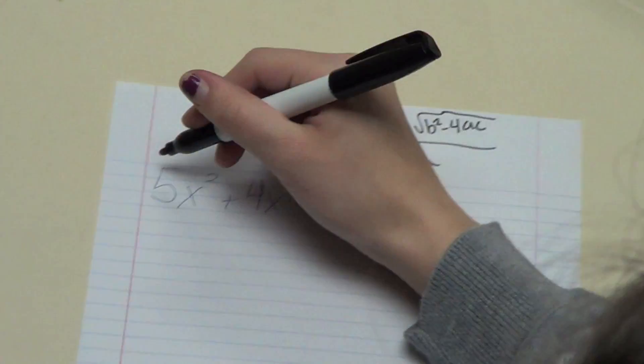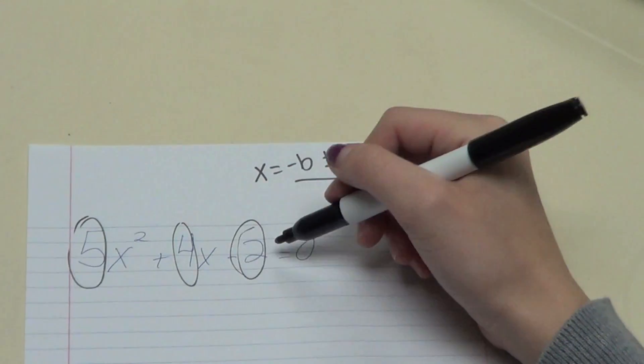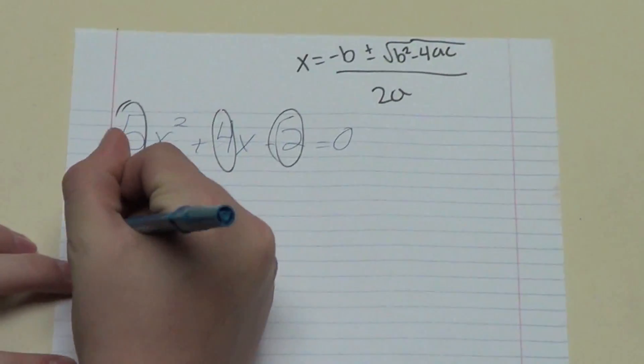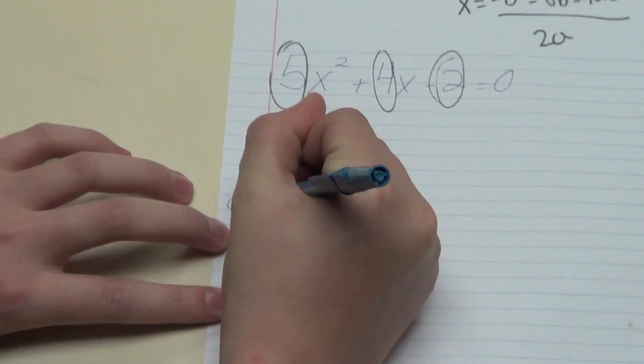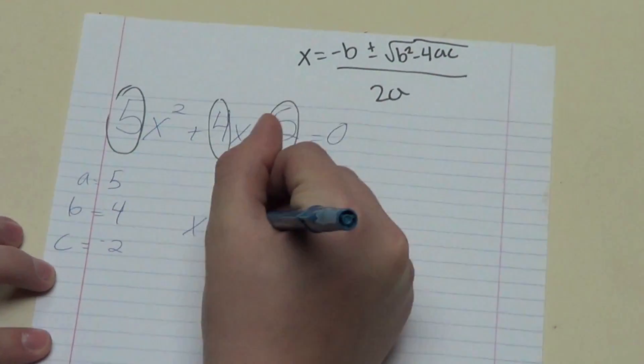Yeah, this is a, this is b, and this is c. Okay. So a equals 5, b equals 4, and c equals negative 2? Yep. So you plug it into the equation.